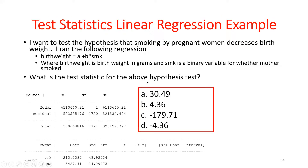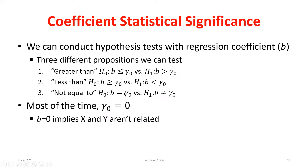We could do left or right tail tests, but for the sake of this class the situations in which you use those are rare. We almost always start out assuming that the slope is equal to zero, and we're trying to see whether or not it's anything other than zero. So we always have the same hypothesis test in linear regression — that the slope equals zero — and we see if we can reject that.